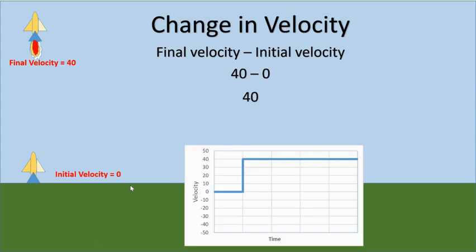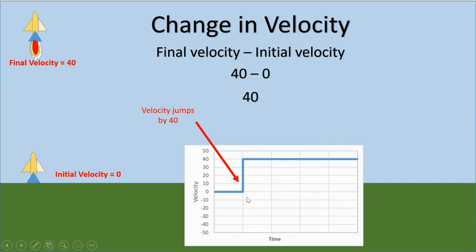If you were to graph the motion, the object is on the ground for a certain amount of time with a velocity of zero, then when it shoots up its velocity quickly jumps to 40. You can see that is a jump of 40 on the velocity graph. If you just had the graph, you could look at how big this jump was, and that would tell you what the change in velocity was.